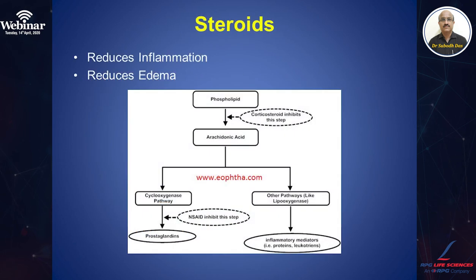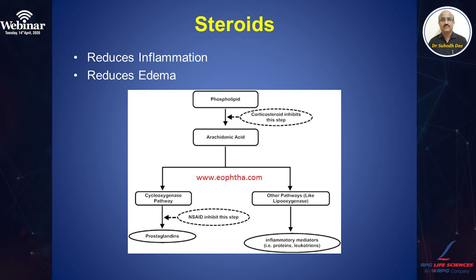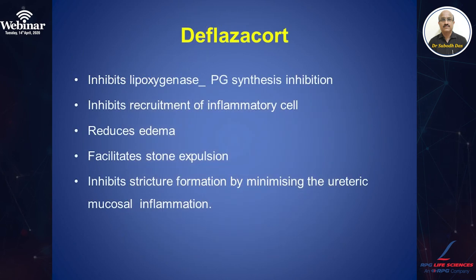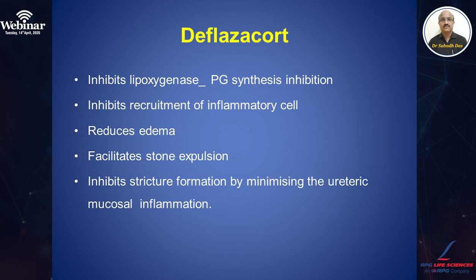What is the role of steroids? Impaction of the stone causes inflammation and edema around the stone. A long-standing large stone can cause more inflammation, more edema, and chances of long-term stricture. The purpose of giving steroids is to reduce inflammation. Corticosteroids inhibit the conversion of phospholipids to arachidonic acid, blocking the pathway leading to release of prostaglandins. Deflazacort is the steroid most commonly used for medical expulsion therapy — it inhibits prostaglandin synthesis, inhibits recruitment of inflammatory cells, reduces edema, facilitates stone expulsion, and inhibits stricture formation by minimizing ureteric mucosal inflammation.